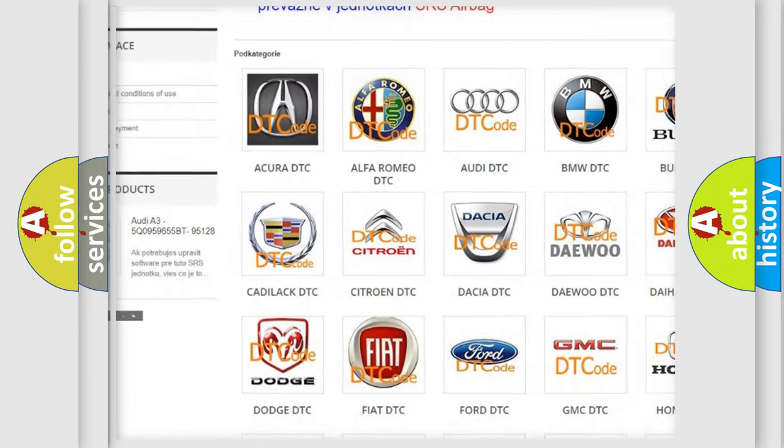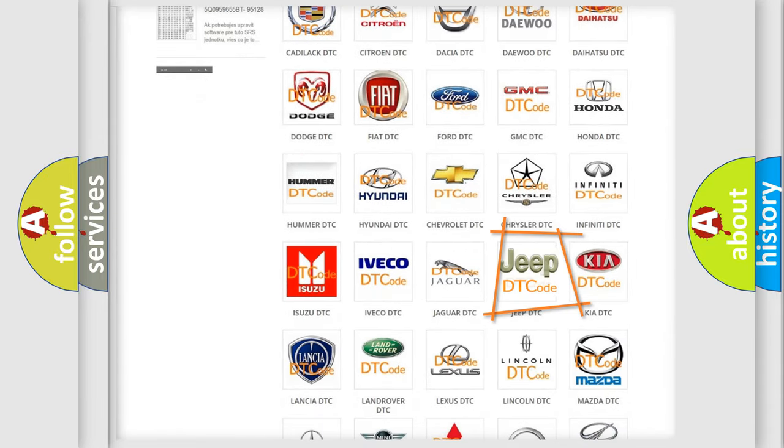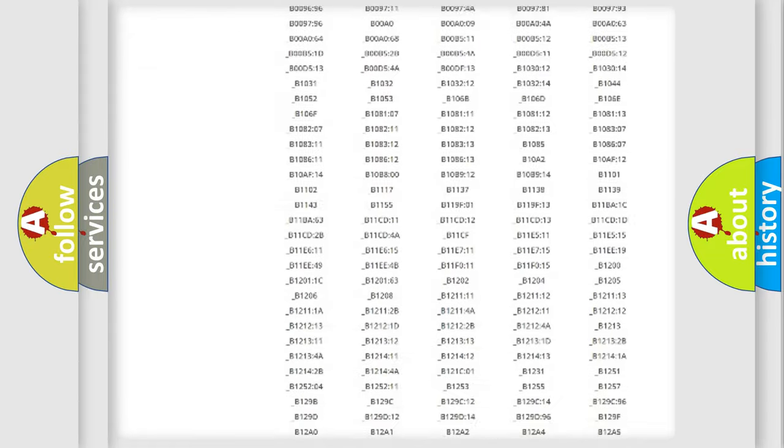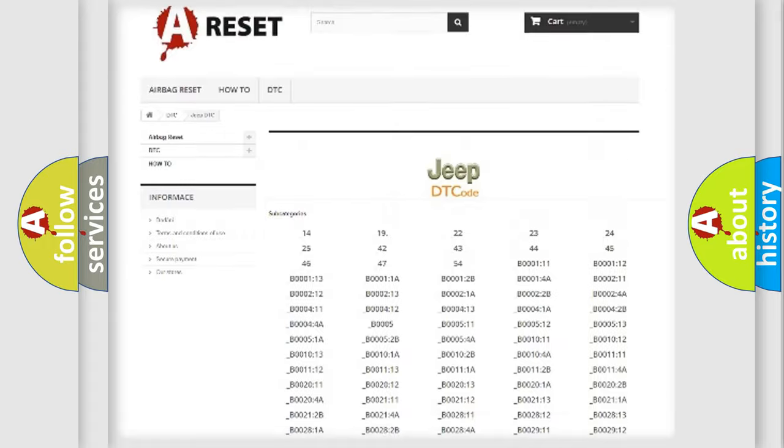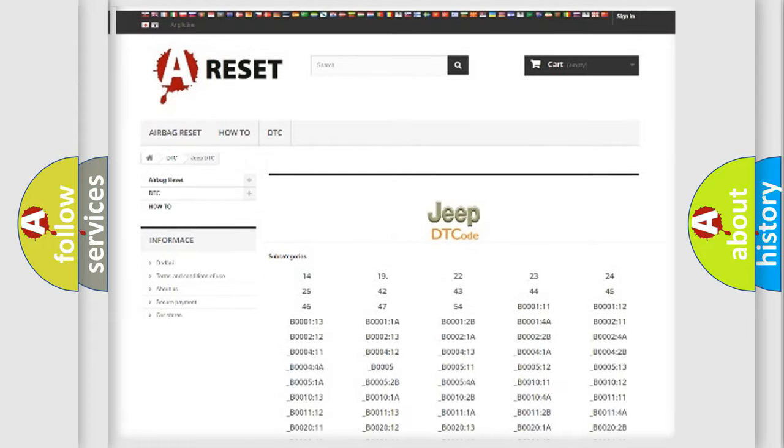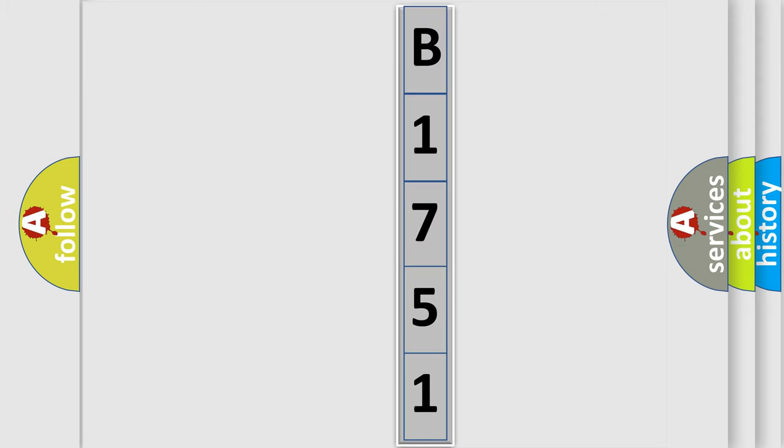Our website airbagreset.sk produces useful videos for you. You do not have to go through the OBD2 protocol anymore to know how to troubleshoot any car breakdown. You will find all the diagnostic codes that can be diagnosed in Jeep vehicles, and many other useful things. The following demonstration will help you look into the world of software for car control units.